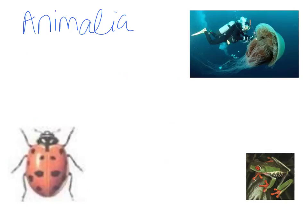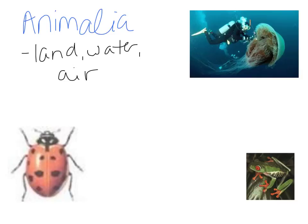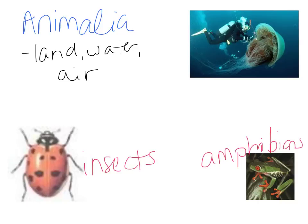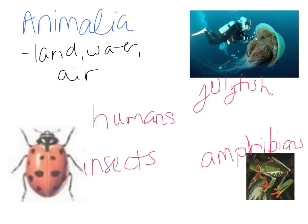Animals will live virtually anywhere — on land, in water, even in the air. The animal kingdom is the most diverse in appearance of all the kingdoms. You have a wide variety of organisms ranging from insects like ladybugs, to frogs and amphibians, to aquatic and marine animals like the large jellyfish pictured, to humans. There is a very wide variety in appearance in the animal kingdom.